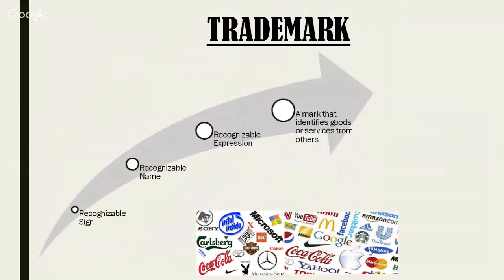A trademark is any recognizable sign, name, or expression that identifies your goods or services from others. Once you see the symbol, you instantly know whose goods or services they represent — for example, the Apple logo. A trademark is a recognizable sign, design, or expression which distinguishes the products or services of a particular trader from similar products or traders.